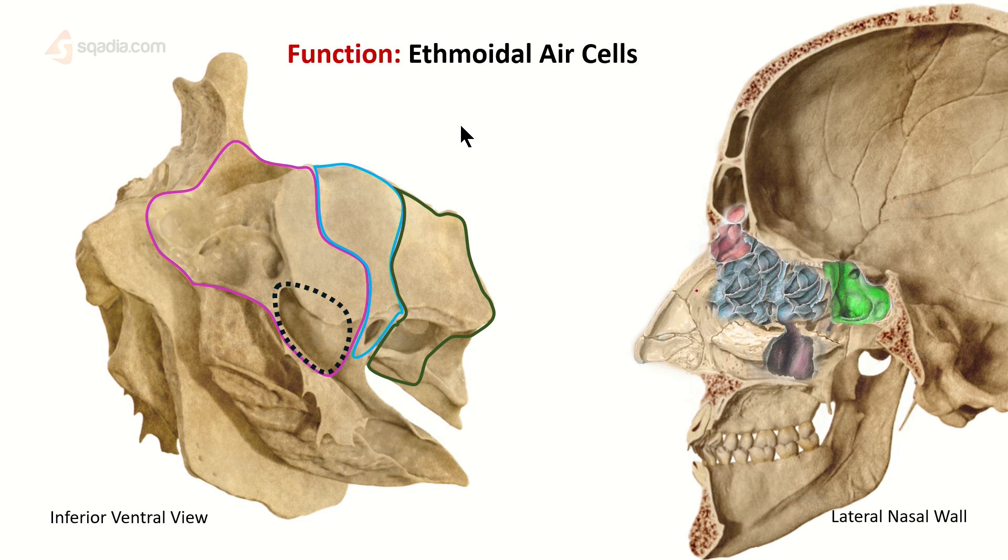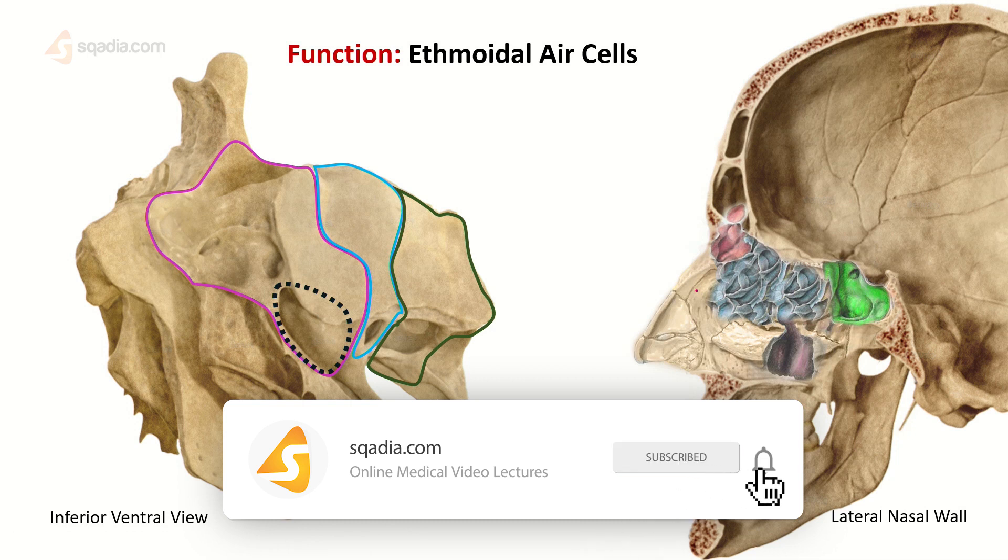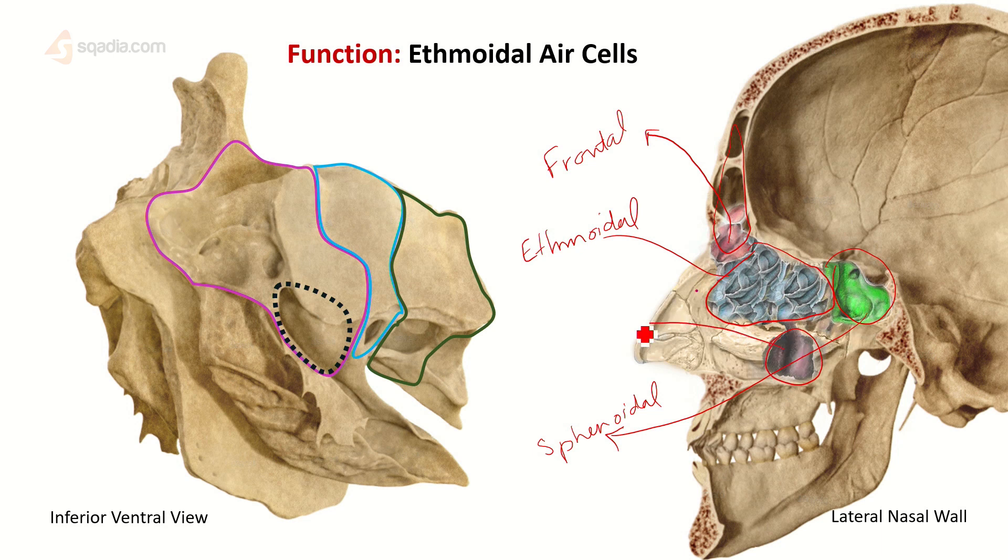Another important function of the ethmoid bone is that it participates with all of the other air sinuses in the skull bones to help create resonance in our voice and keep our head light for us to carry. So this blue group over here is the ethmoidal air cells. This group over here is the frontal air cells. This group here is the sphenoidal air cells, and this group over here is the maxillary air cells.